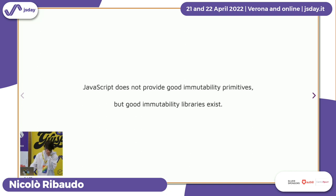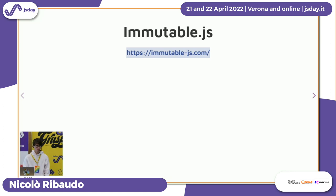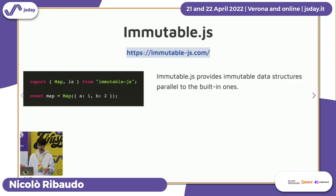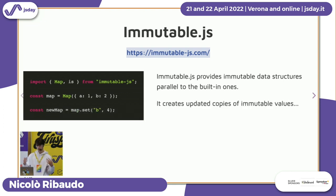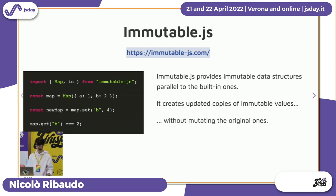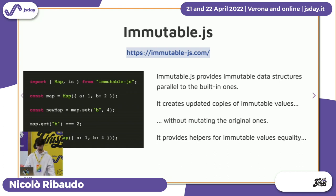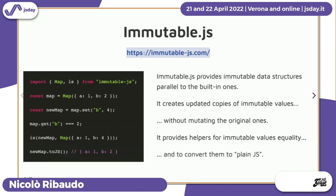There are some really good libraries that can help bring immutability to the language. The most popular one is Immutable.js. It provides parallel data structures equivalent to the built-in JavaScript ones. For example, instead of JavaScript objects we can use Immutable.js maps, and we have lists which are the equivalent of arrays. Those immutable data structures provide methods — for example, to set a new property — but it doesn't modify the existing map; it creates a new map with the updated property. Immutable.js also provides utilities to define equality between two structures and to convert them back to plain JavaScript objects.